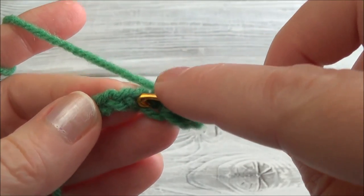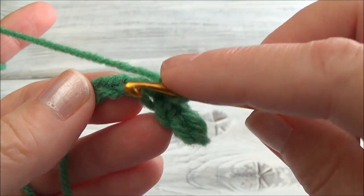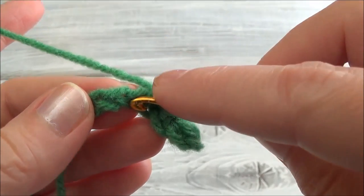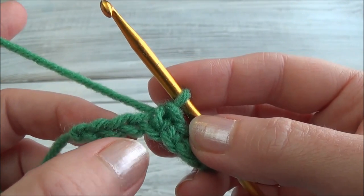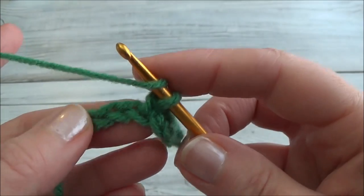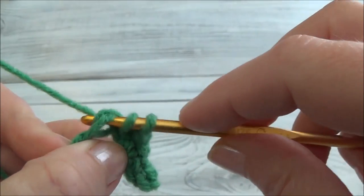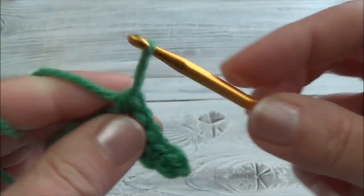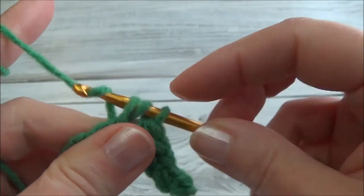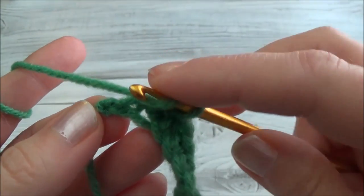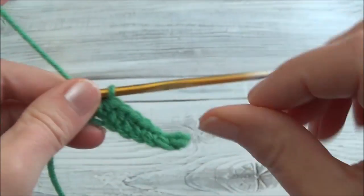The one we just worked is going to be a big loop. Going into the next chain, into the third one, now into the fourth. Now we're going to put a half double crochet in the three remaining chains.